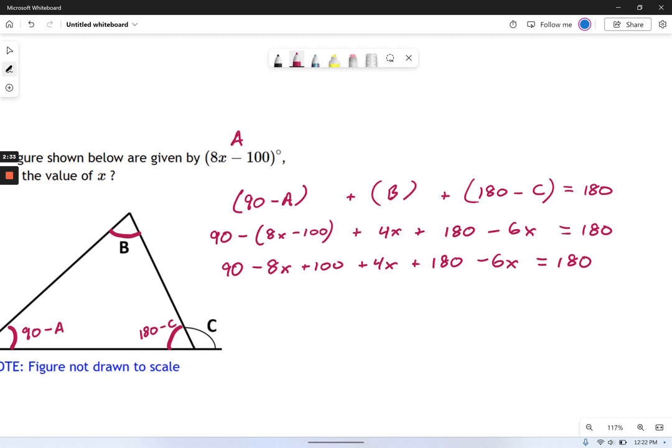I like to combine like terms. So if I combine all my numbers together, I've got 90 plus 100 plus 180, which is like 370.